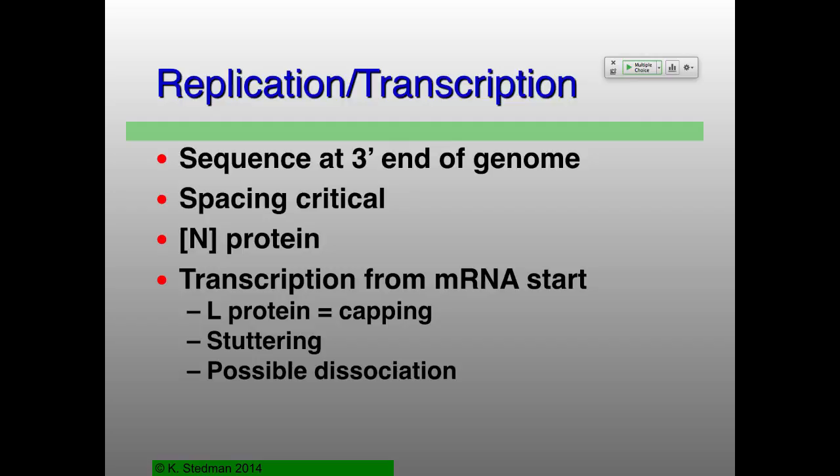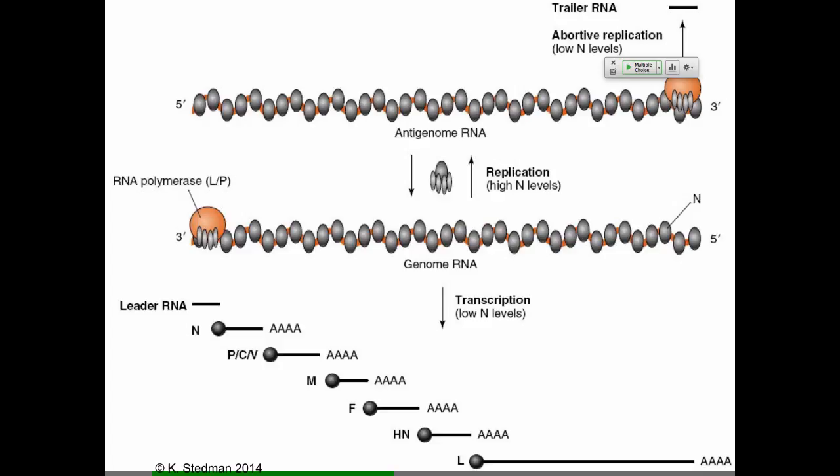If you've got a large amount of N protein — represented by these gray ovals — it will bind to all of your RNAs, because that's what the nucleocapsid protein does. If you've got lots of nucleocapsid protein around, it'll bind to the RNA. The RNA is wrapped around the outside of the nucleocapsid. If the N protein is bound, the RNA-dependent RNA polymerase will not stop and stutter and start again — it will continue to make RNA through the whole rest of the genome. So again, it's all about the concentration of the N protein.